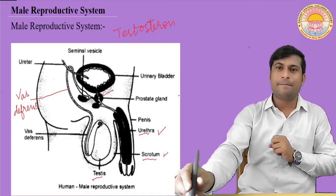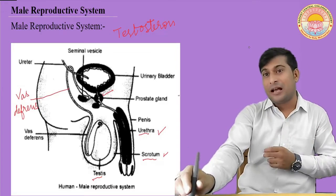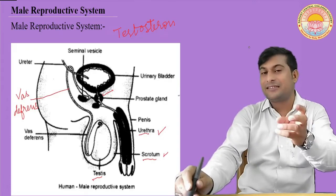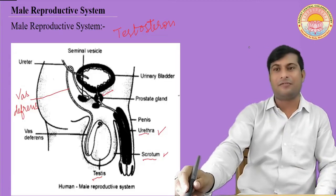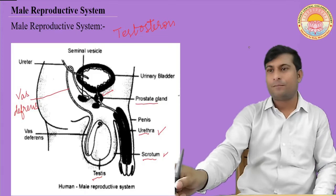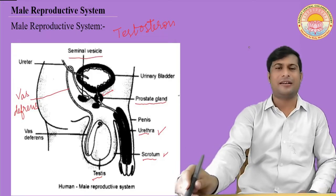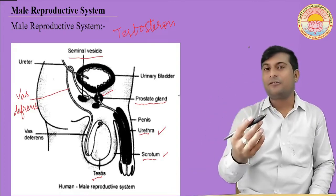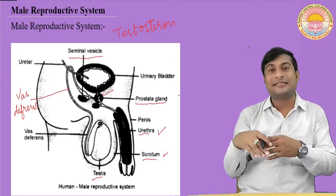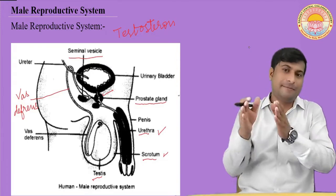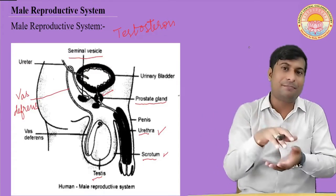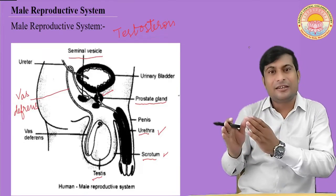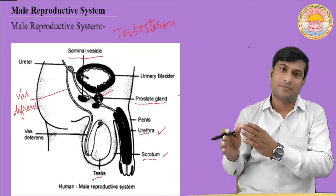Along the path of the vas deferens there are glands — the prostate gland and seminal vesicles. You can see the prostate gland and the seminal vesicles on the screen. These glands are found on the path of the vas deferens and they add their secretion to the sperm so that their transportation may be easier.